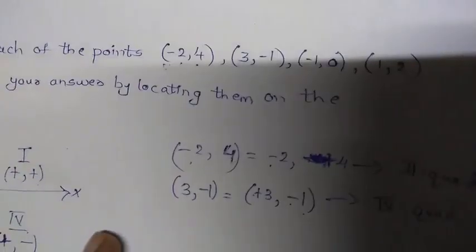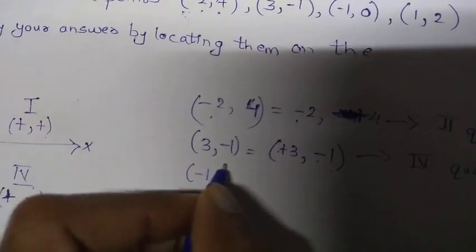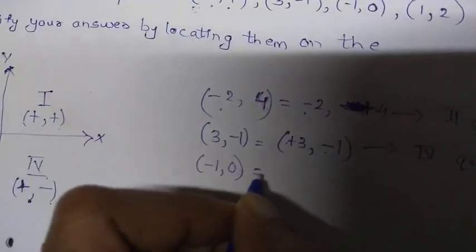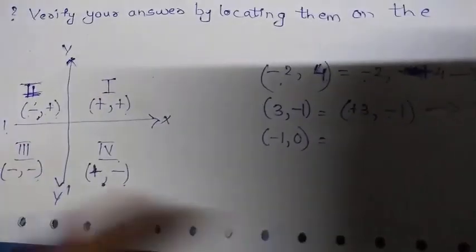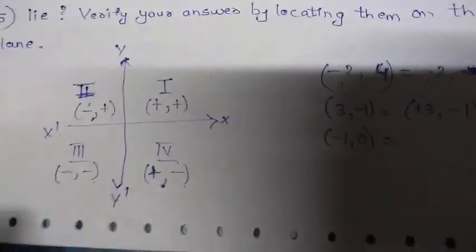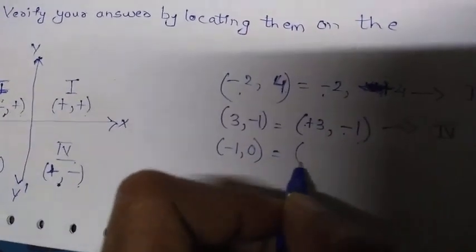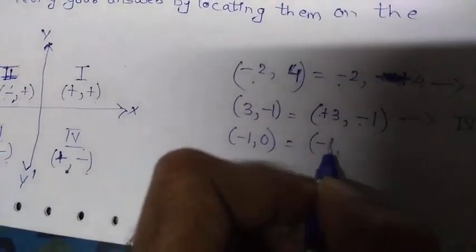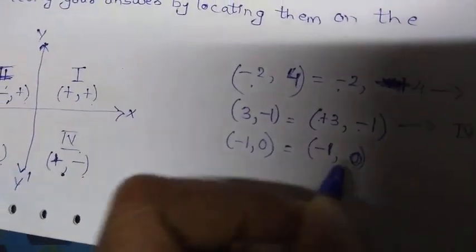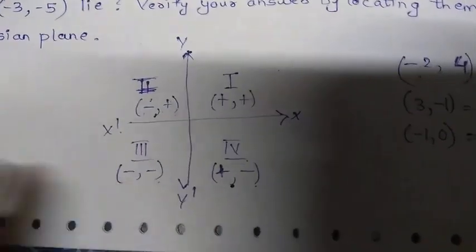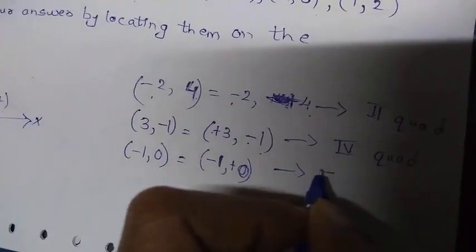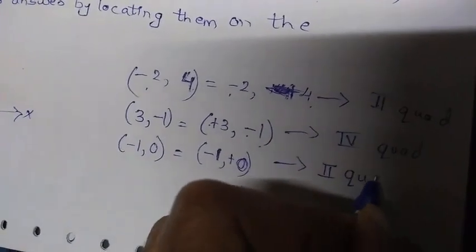For (−1, 0): the y-coordinate is 0, which is neutral and has no sign. We consider it as positive. So the signs are minus and plus, which means it lies in the 2nd quadrant. Hence, (−1, 0) also belongs to the 2nd quadrant. If there is no sign, we consider it as positive.